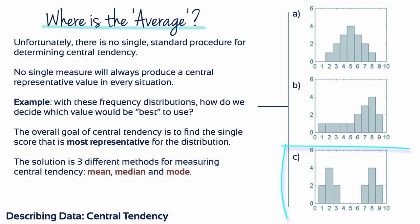Now consider the third distribution. Again, the distribution is symmetrical, but now there are two distinct piles of scores. Because the distribution is symmetrical, with x equals 5 as the midpoint, you may choose x equals 5 as the center. However, none of the scores are located at x equals 5 or even close. So this value is not particularly good as a representative score.